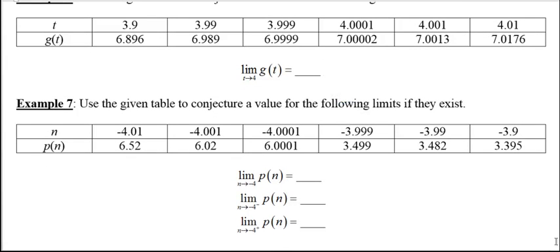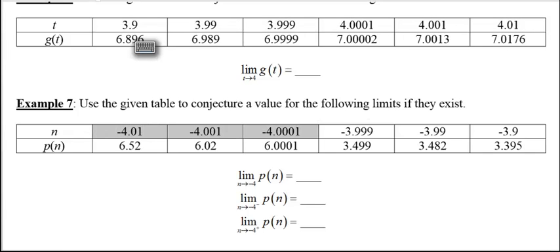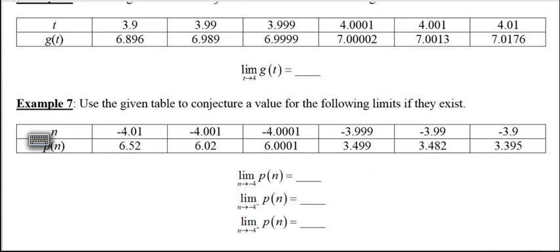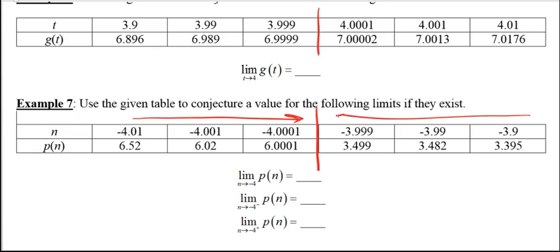Here we have n and p of n. Remember how we order our numbers — both in the last example and this one, the input values are going left to right on the number line. Negative 4 is right in the middle, just as 4 was in the previous example. So the values to the left of negative 4 are approaching it from the left, and those to the right are approaching from the right. As n gets closer and closer to negative 4 from the left, the p of n values appear to be approaching 6. So this left-hand limit appears to be 6.